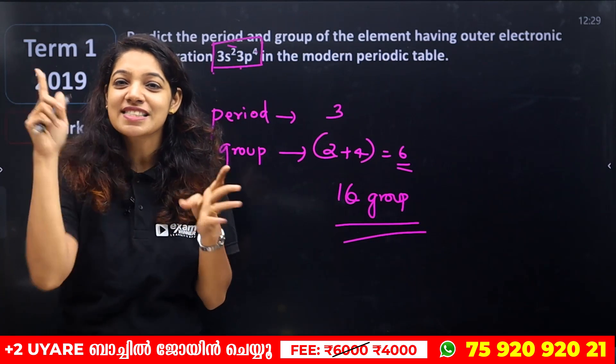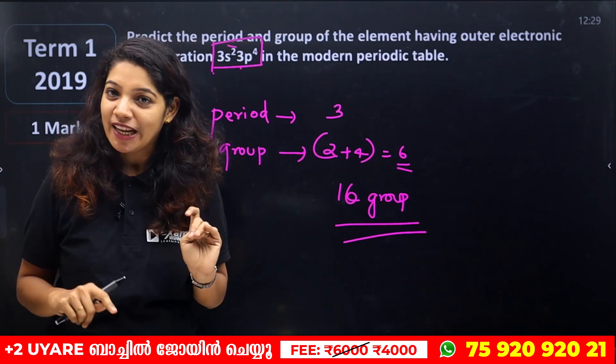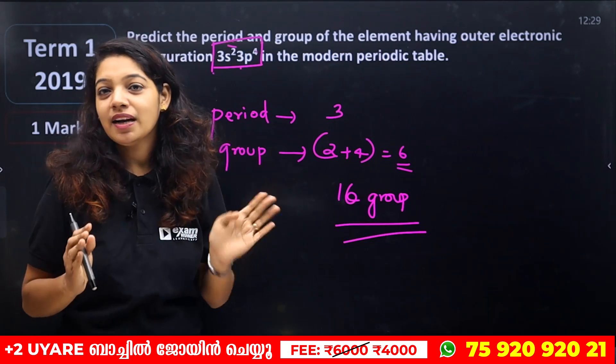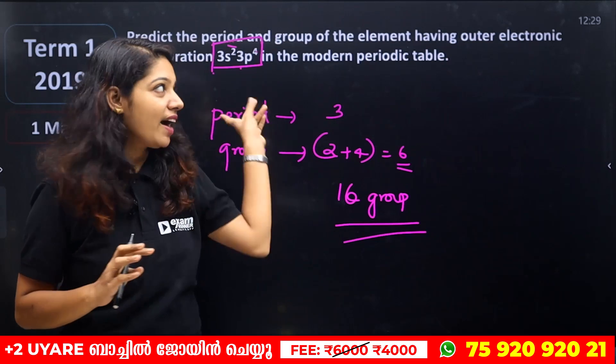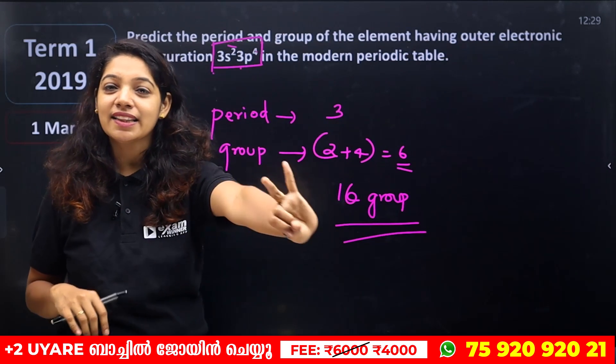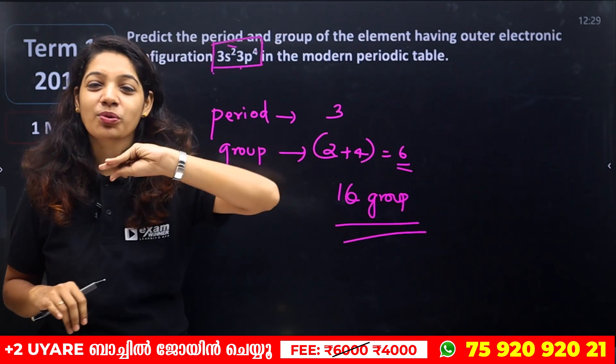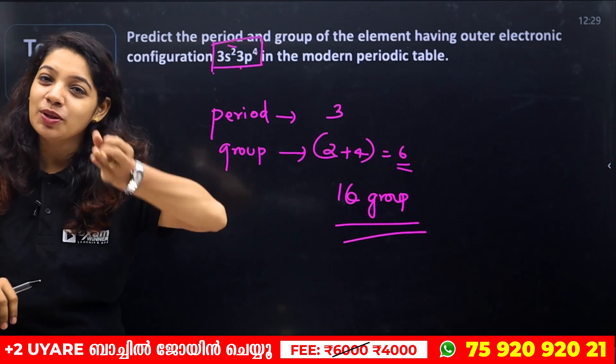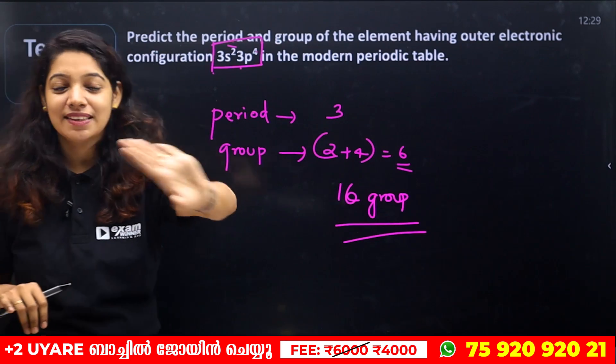The total valence electrons are used to determine the group number — for example, group 13 elements have 3 valence electrons.